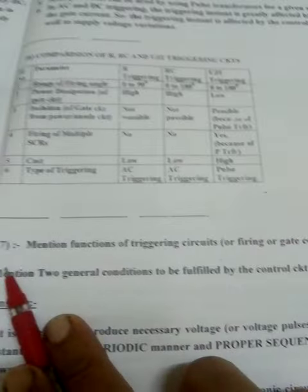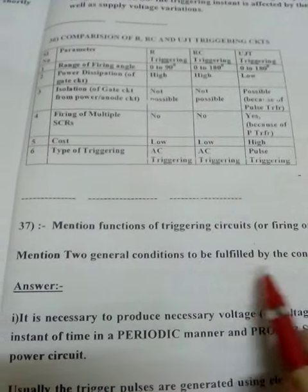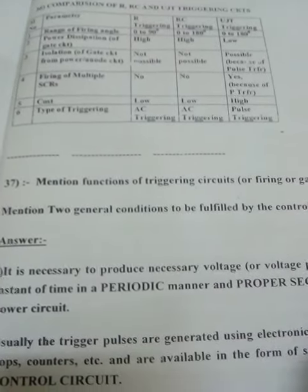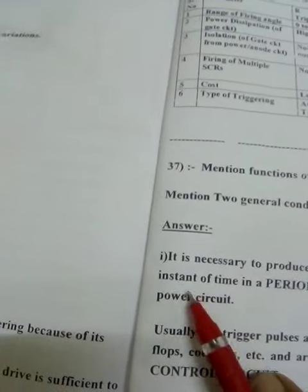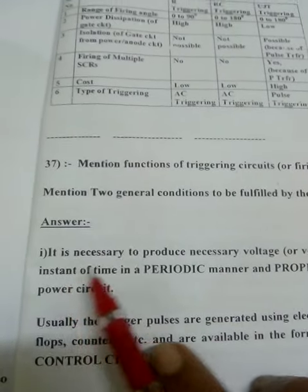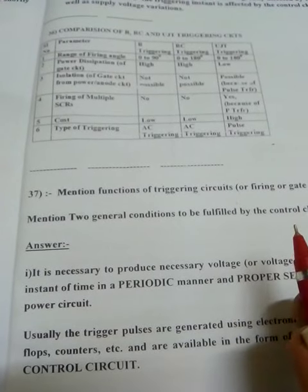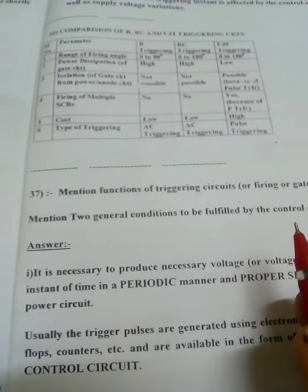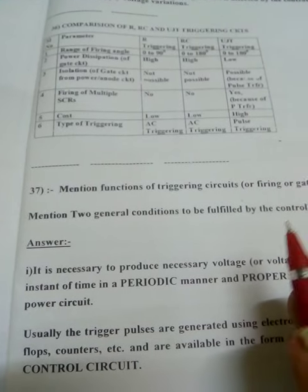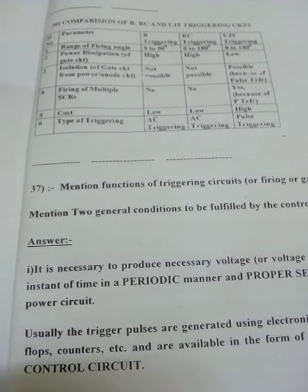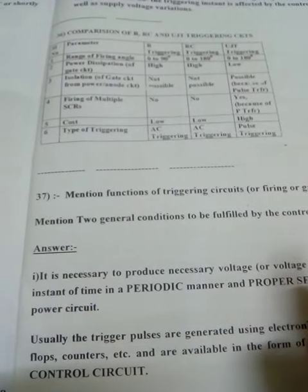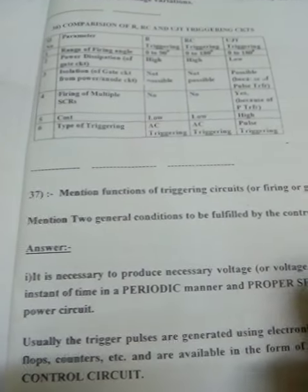Next, an important point: two important functions to be fulfilled by the gate circuit. The first function is that it should fire at the right instant in a periodic manner — meaning you should fire at the right alpha, the SCR should fire at the right instant, and it should continue throughout the operation. In every cycle or every half cycle, the gate should get the triggering pulse at the same instant.